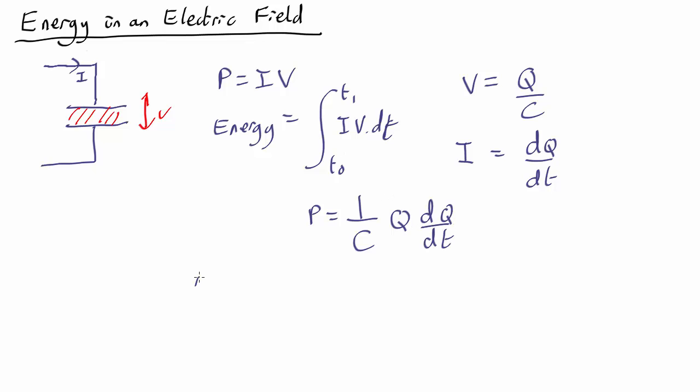So plug that into the integral so we've got the energy equals one over C integral from the starting time to the finishing time Q DQ by DT DT. Now once again we can do that trick that the mathematicians hate and cancel the DT's so that just comes out as one over the capacitance the integral from the starting charge which will be zero to the finishing charge of Q DQ.